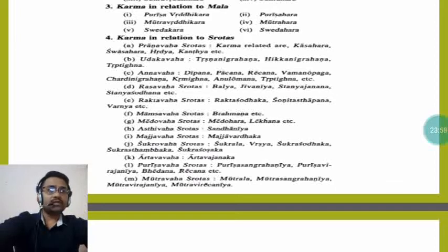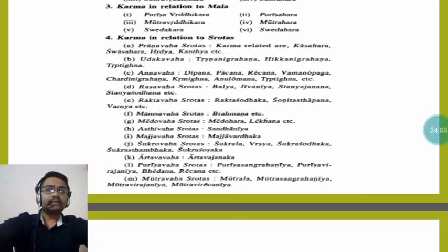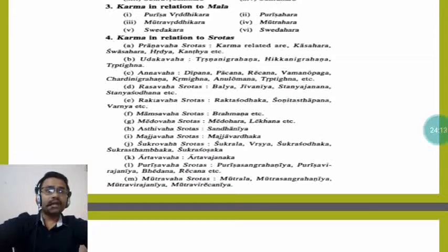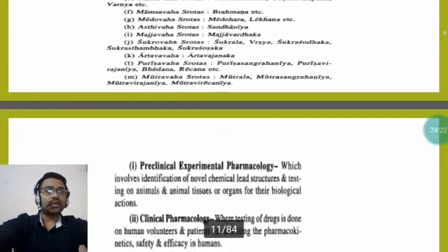Shukravaha Srotas include Shukrala, Vrishya, Shukrashodhaka, Shukrastambha, and Shukrashoshaka. Aartavaha Srotas include Aartavajanaka. Purishavaha Srotas include Purisha Sangrahaniya, Purisha Virajaniya, Bhedana, and Rechana. Mutravaha Srotas include Mutrala, Mutra Sangrahaniya, and Mutra Virajaniya.